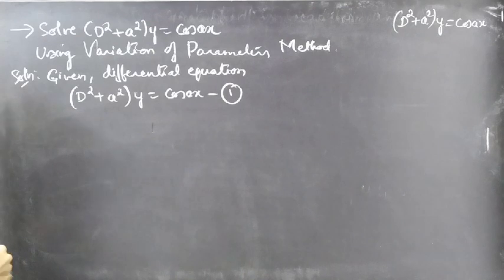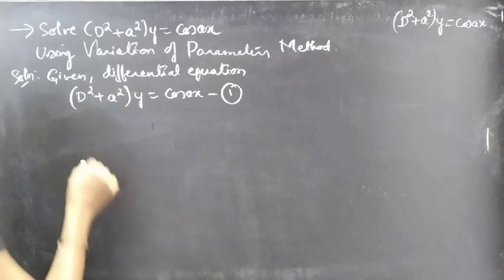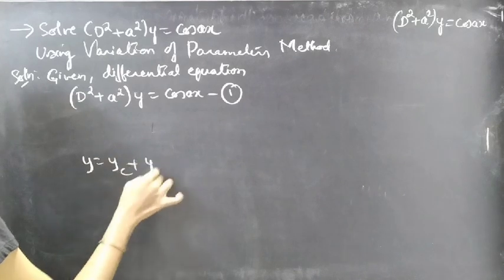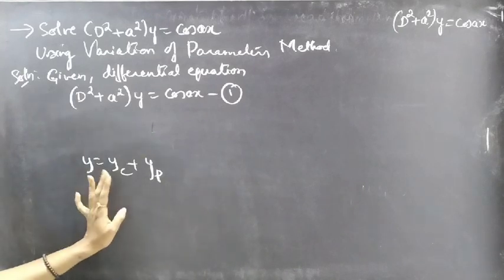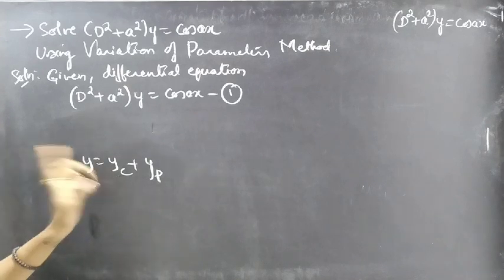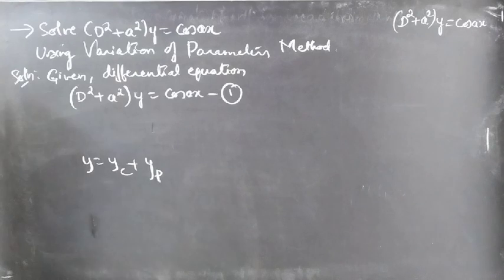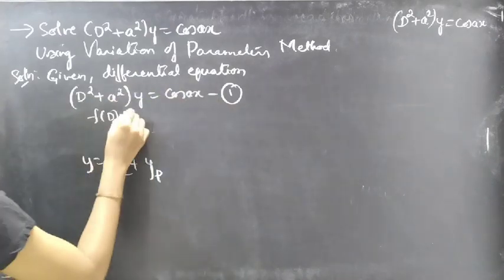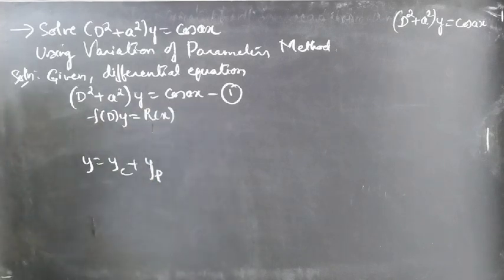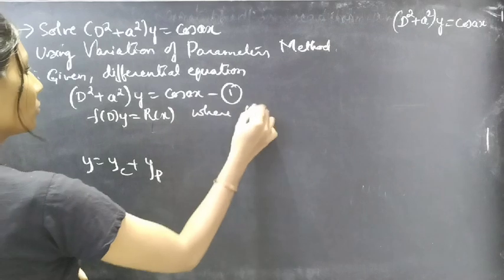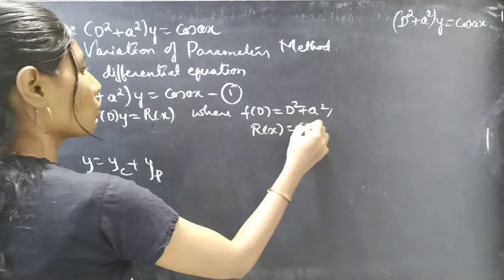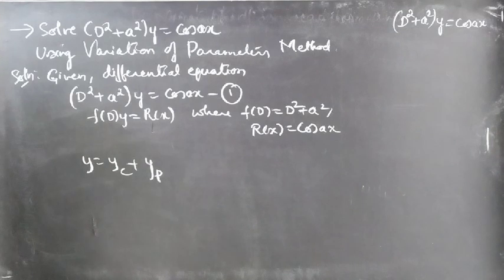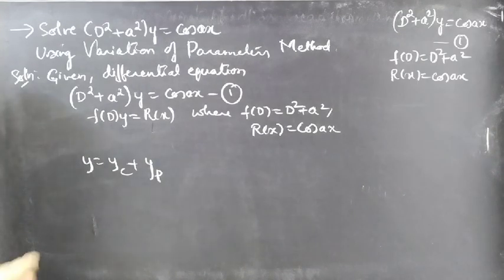We'll find the solution using y equals yc plus yp, where yc is the complementary function and yp is the particular integral. First we'll find yc using the auxiliary equation, and later using yc we'll find yp. This equation is in operator form: f of d into y equals r of x, where f of d equals d squared plus a squared, and r of x equals cos ax.